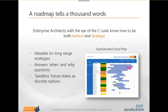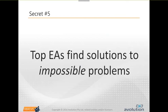Secret number five: top enterprise architects find solutions to impossible problems. Too often we hear that enterprise architects are the 'no police' - they stop things. The business doesn't want to talk to you because they're afraid you're going to say no. So I've got a little exercise here - see if you recognise who that is. I've chosen this carefully for the chance that maybe you won't. Jeff Bezos - you would all know him as being the head of Amazon. This picture is from his high school yearbook so he still has hair.